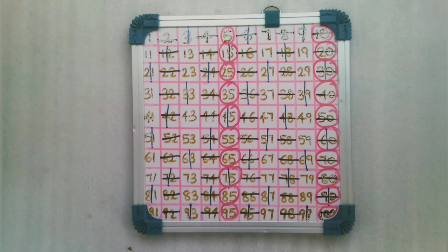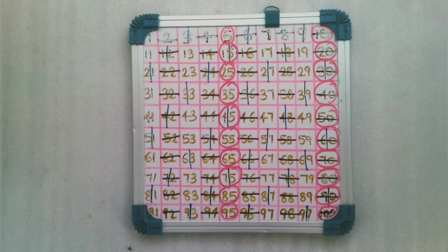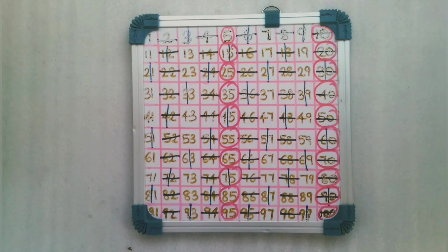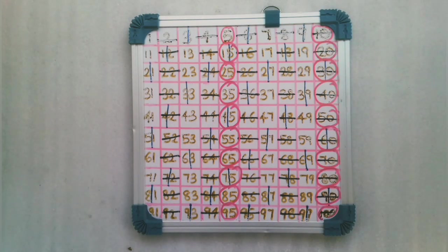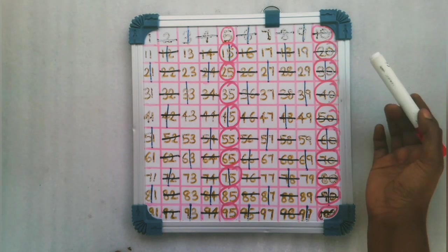Now we have multiples of 2 marked with a horizontal line, multiples of 3 with a vertical line, and multiples of 5 with a circle. We are going to check which numbers have all three combinations of markings.